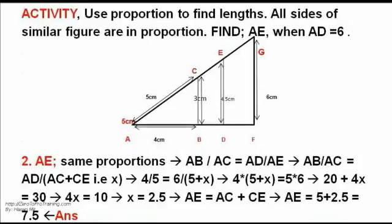Use proportions to find lengths. All sides of similar figures are in proportion. AB to AC is AD to E. When AD equals 6 from the last slide, solving leads to E equals 7.5. The answer — see image.